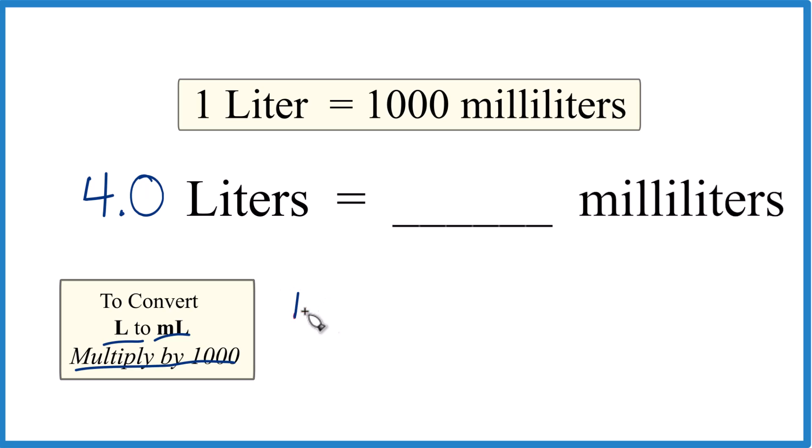Like this. That's 4.0 liters times 1,000, and that's 1,000 milliliters per liter, so ml over liter. Now we multiply. We have liters on top and the bottom. We're going to be left with milliliters. That's what we're looking for here.